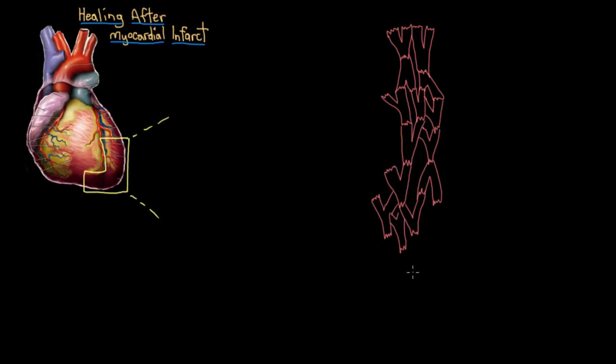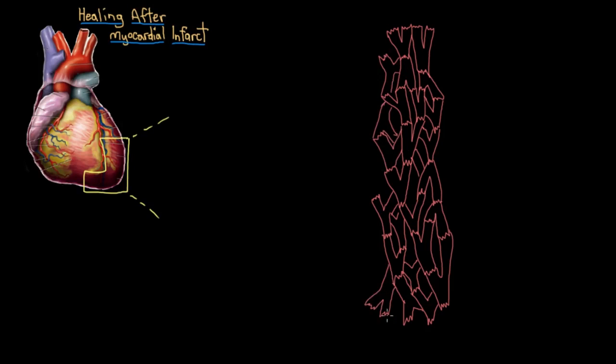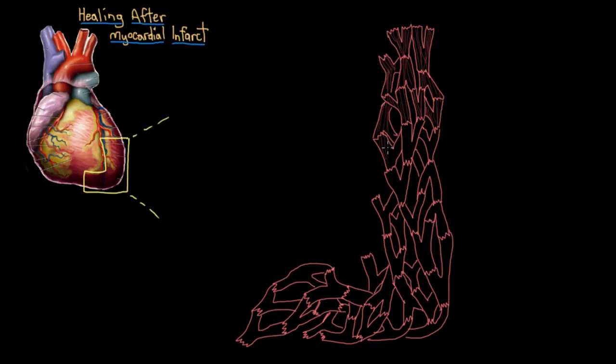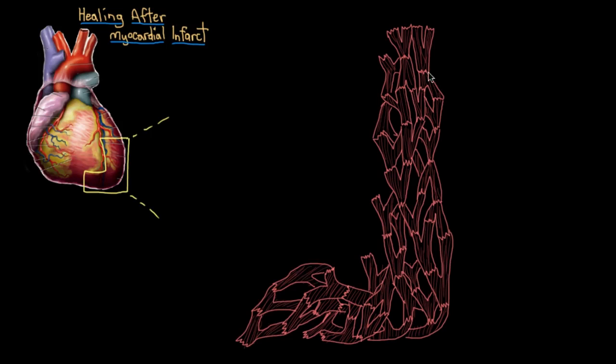So I'll draw in these cardiomyocytes, these heart muscle cells here. And these are the striations that they have because of their contractile proteins. And here are their nuclei. So we'll start off with this non-infarcted heart here, with nice intact muscle.